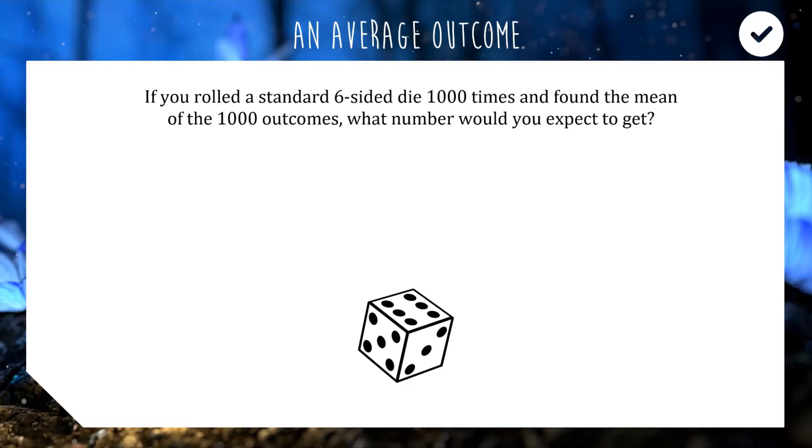Starting with the question: if you rolled a standard six-sided die 1,000 times and then found the mathematical average, which is the mean of all 1,000 outcomes, what number should we expect to get? We're expecting to roll 1, 2, 3, 4, 5, and 6 an equal number of times. If we found the average of 1, 2, 3, 4, 5, and 6, the answer we would get is 3.5.